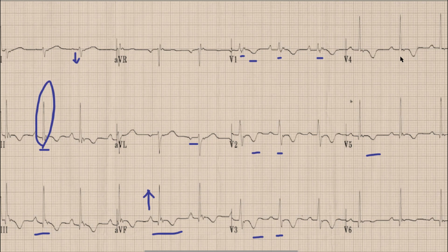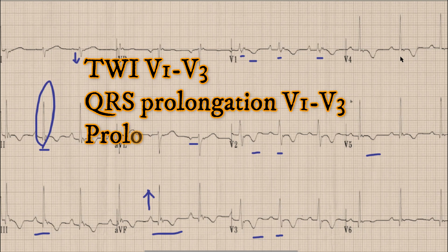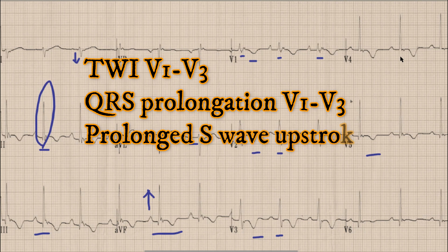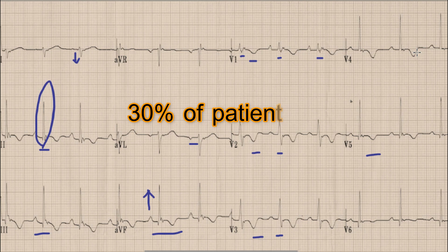The main ECG findings in a patient with ARVC include T wave inversions in anterior chest leads V1, V2, and V3. There is localized prolongation of the QRS complex in leads V1, V2, and V3 with a duration of around 110 ms. Also in these leads there is prolonged upstroke of the S wave which is more than 55 ms. The most specific sign of ARVC on an ECG is an epsilon wave, which is present in about 30% of patients.